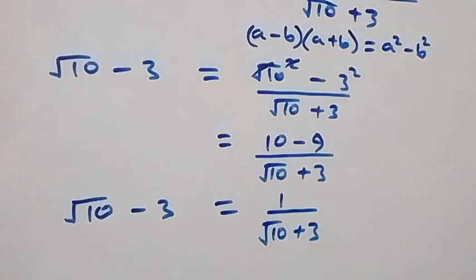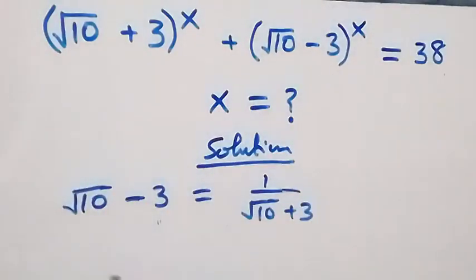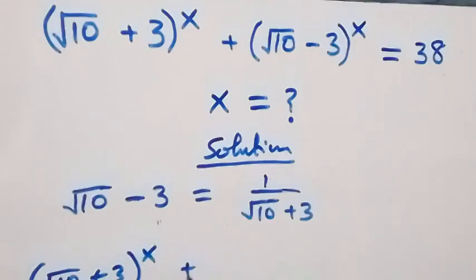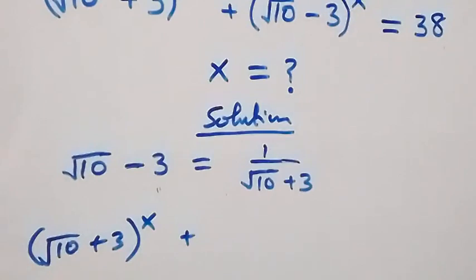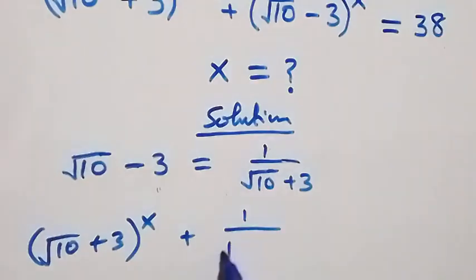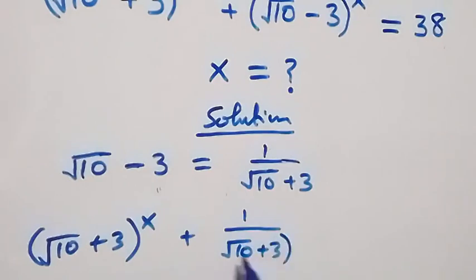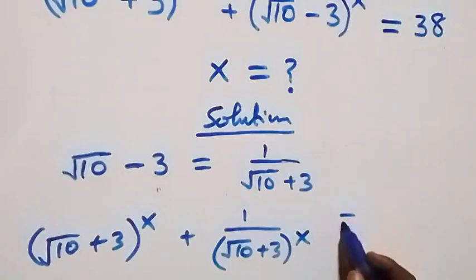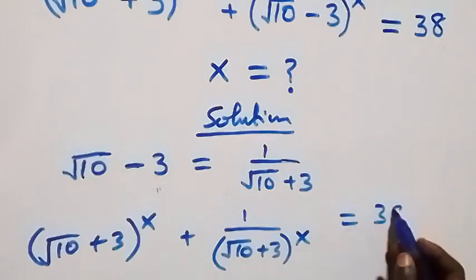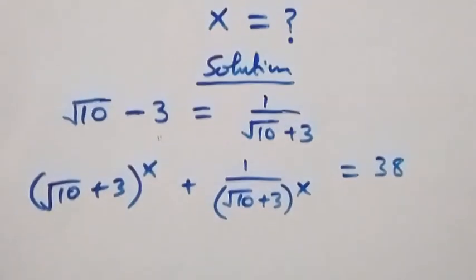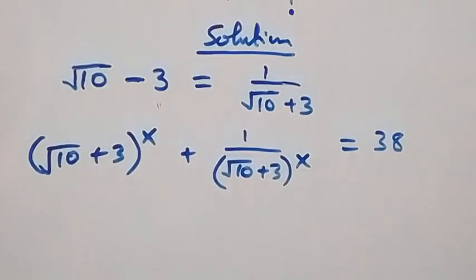This equation can now be rewritten. We have (√10 + 3) raised to power x, plus instead of writing (√10 - 3) we write 1 over (√10 + 3) raised to power x, equals 38.